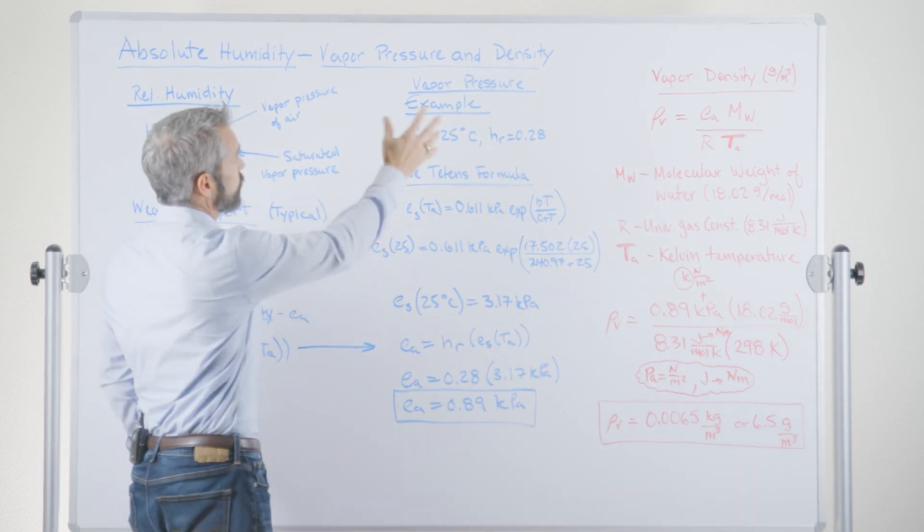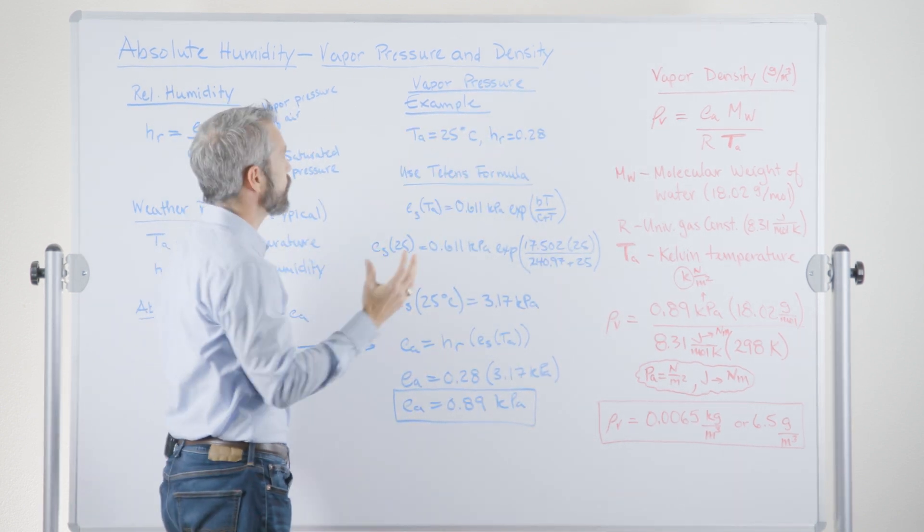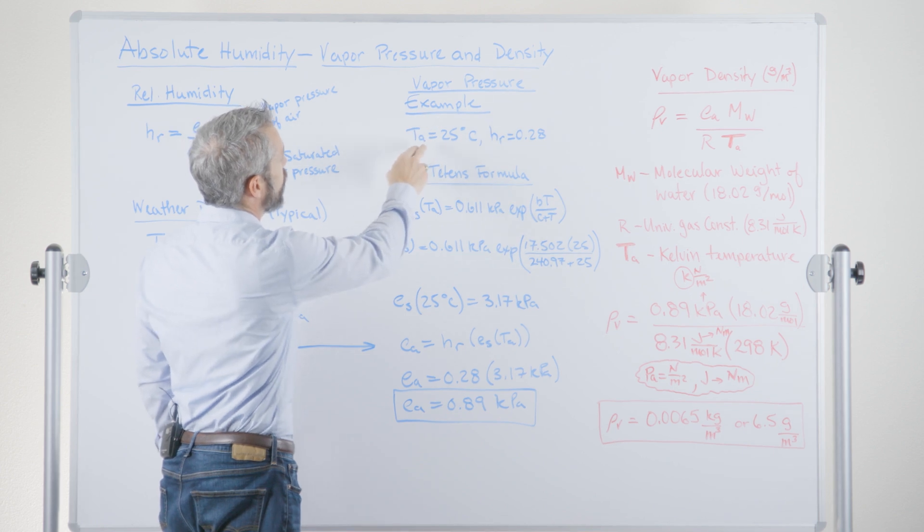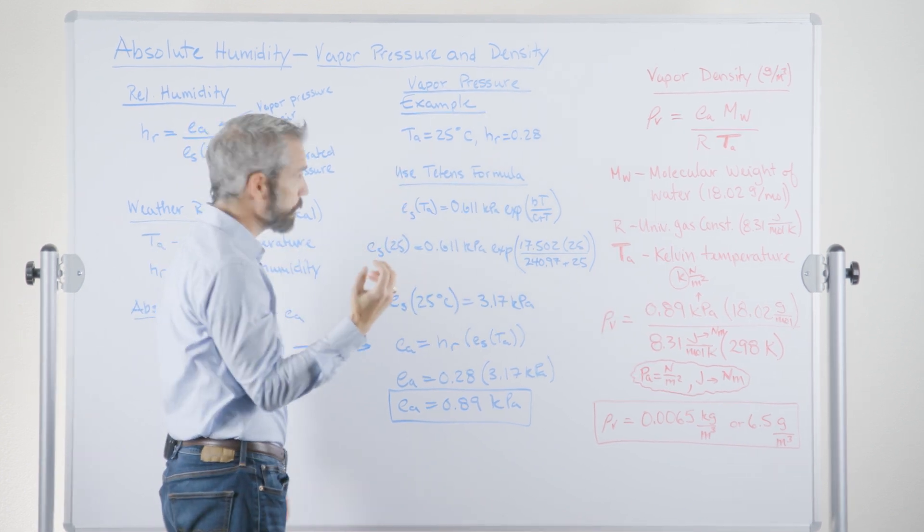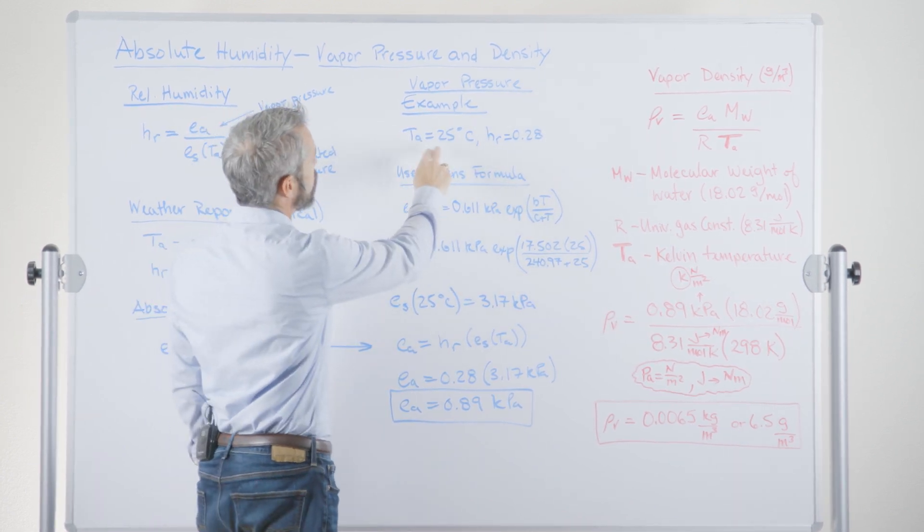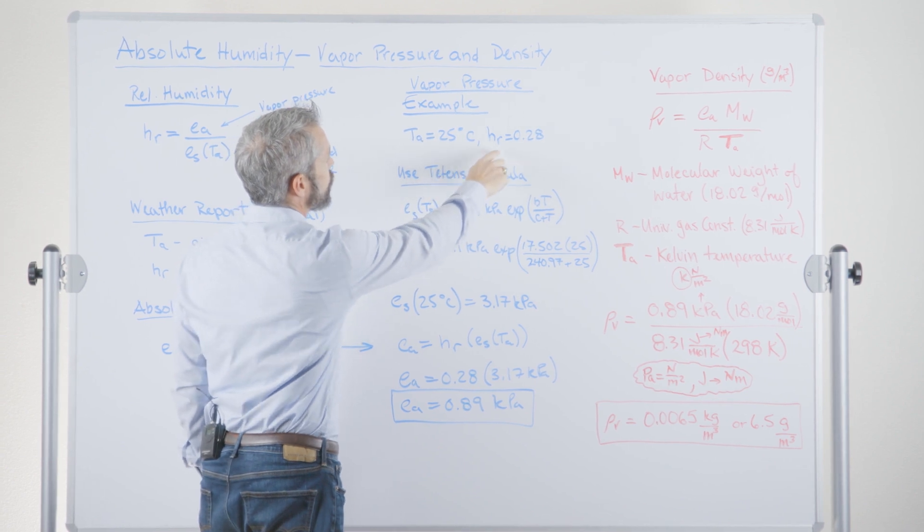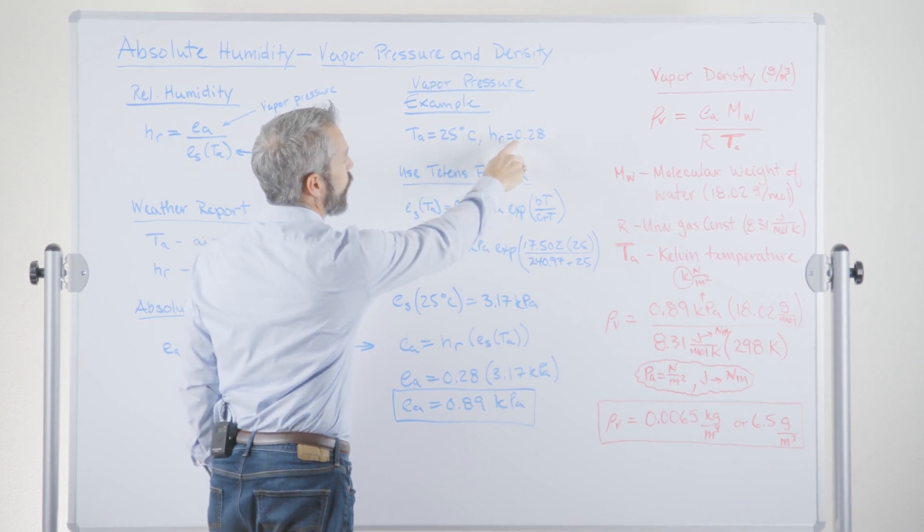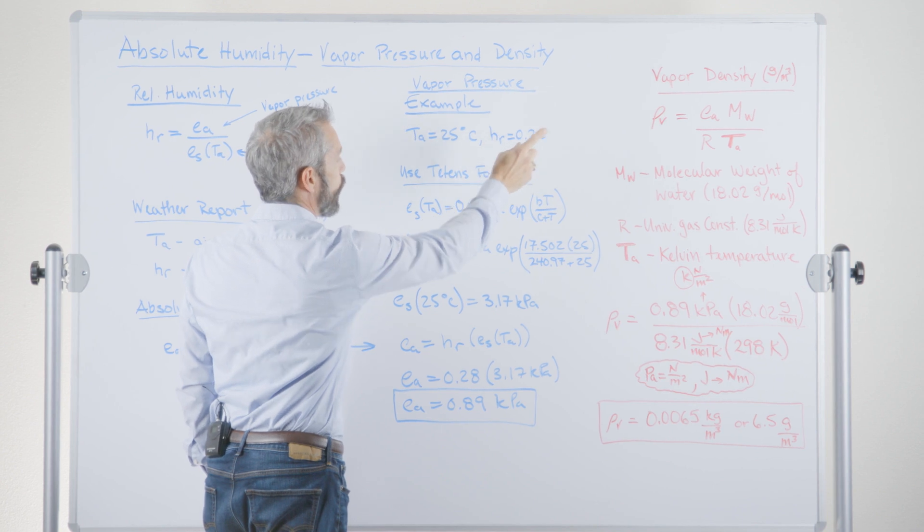How would we do this? Well, let me just talk about an example first in terms of vapor pressure. So let's say we got a weather report and it said the air temperature was 25 degrees Celsius and the relative humidity, HR, was 28% or 0.28.